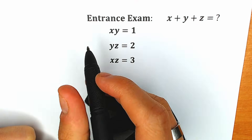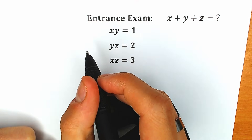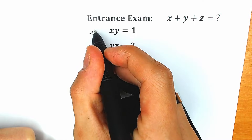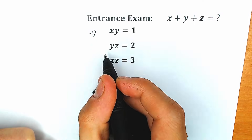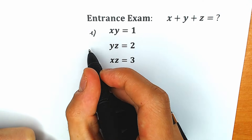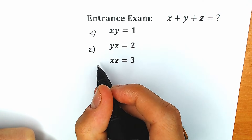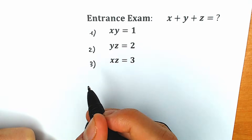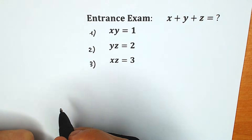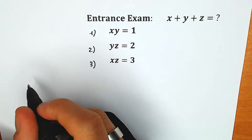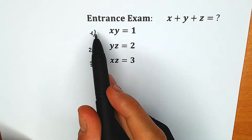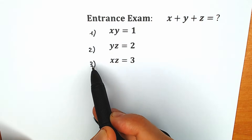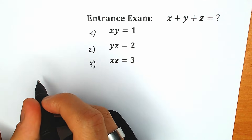So xy equals 1 — let's call this the first equation. yz times z is our second equation, and x times z is our third equation. At the first step, let's multiply the first equation times the second one and divide by the third one.